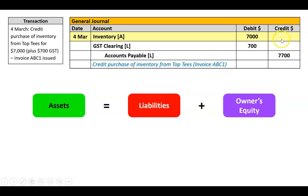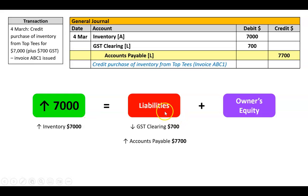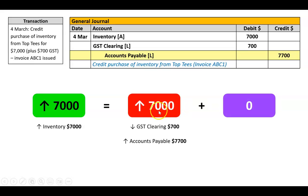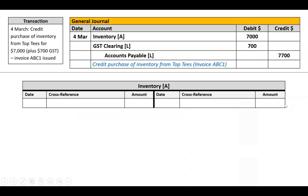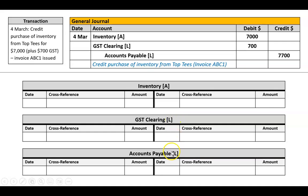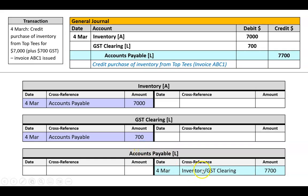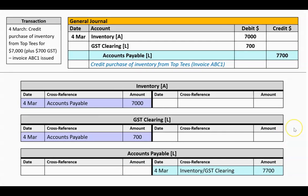Double-checking the accounting equation: inventory asset goes up $7,000; GST clearing liability goes down $700; accounts payable liability goes up $7,700. So assets go up $7,000, liabilities net up $7,000 ($7,700 minus $700), and owner's equity is zero — so that balances. Posting to ledgers: inventory ledger gets a debit, GST clearing gets a debit, and accounts payable gets a credit. In inventory and GST clearing the reference is accounts payable, and in accounts payable I'll do a double reference: inventory slash GST clearing.